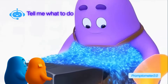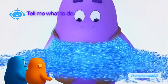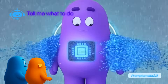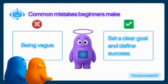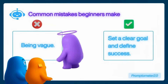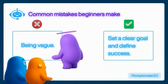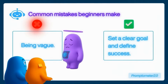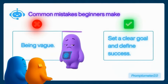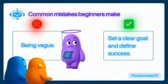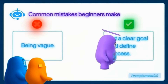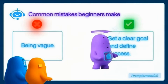Let's cover a few common mistakes beginners make so you can avoid them right away. Mistake number one: being vague. You type something like 'write something nice' and then wonder why the result feels random. If you don't tell the AI what 'nice' means, it'll just guess. Set a clear goal — say what you want and what success looks like.